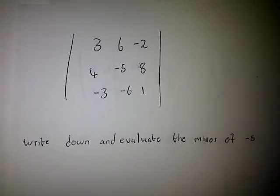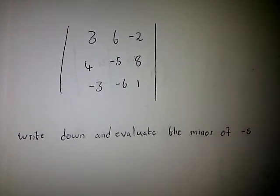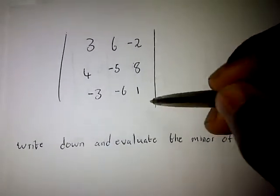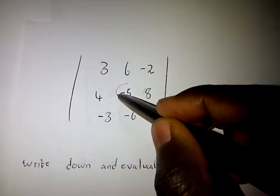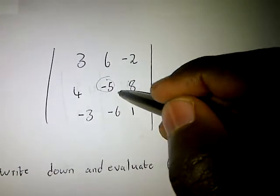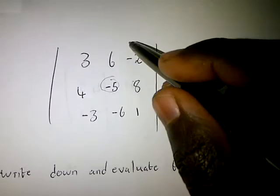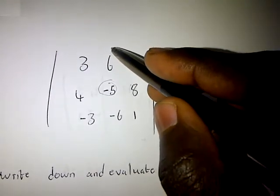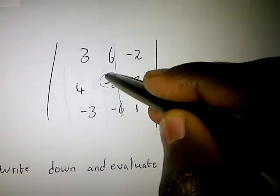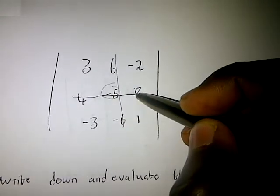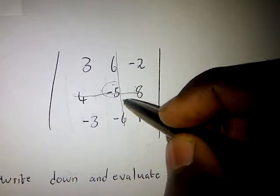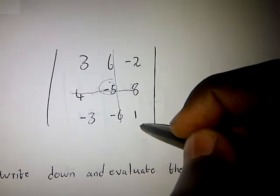Today let's look at our question. It says: write down and evaluate the minor of negative five. Our negative five is this number. To find the minor of negative five, we are going to cancel all the numbers that are in line with negative five — both vertically and horizontally. So we are left with 3, negative 2, negative 3, and 1.